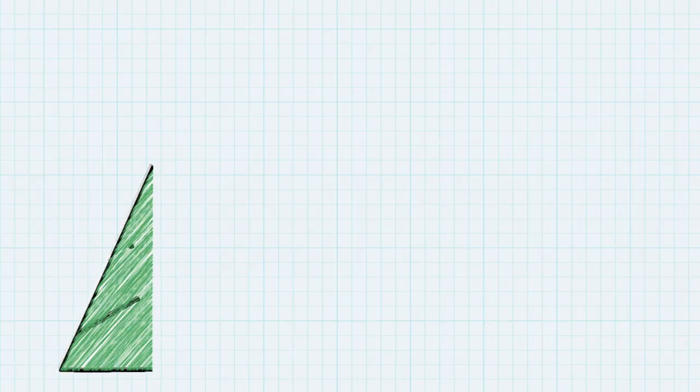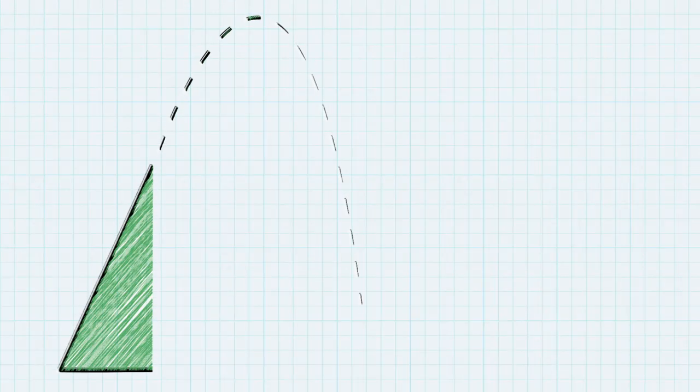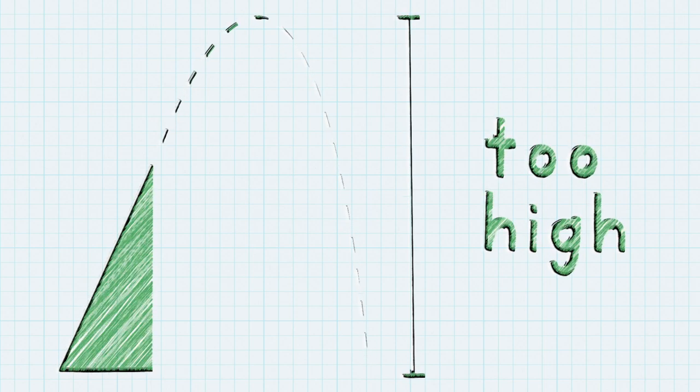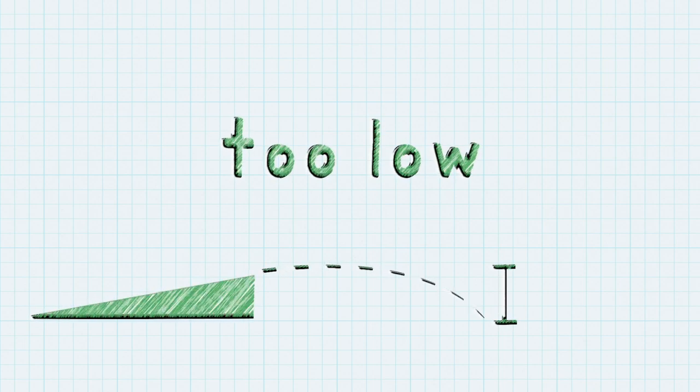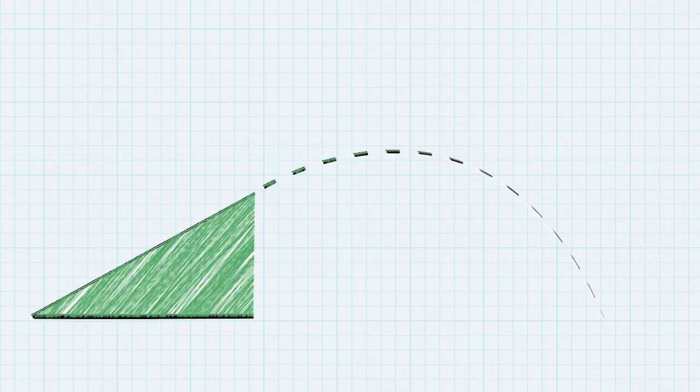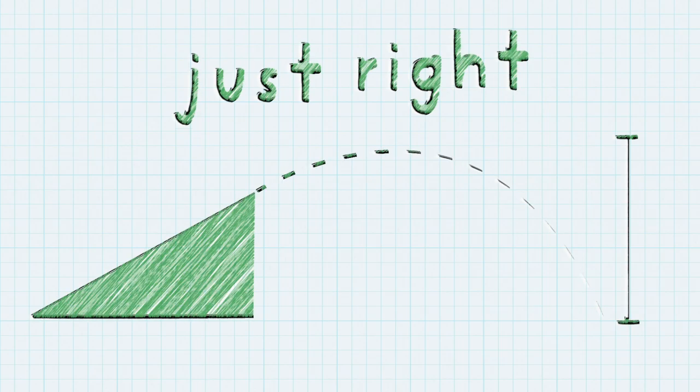A shot that's aimed too high with too much force will create a tall, skinny arc, and the ball will end up short of the basket. A shot that's aimed too low with too little force will create an arc that's short and wide. Like Goldilocks, basketball players are looking for an angle that will create an arc that is just right. The end result is nothing but net.